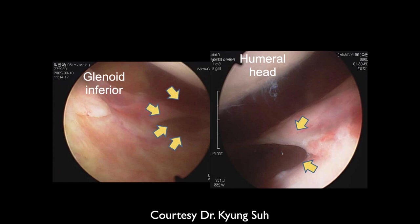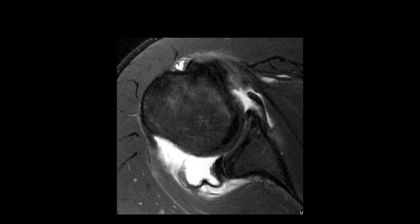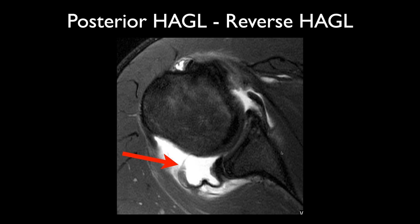We see disruption of the posterior inferior glenohumeral ligament — it appears detached from the humerus, so it's like a reverse HAGL. It's basically a HAGL posteriorly rather than anteriorly, and it's often called a reverse HAGL.